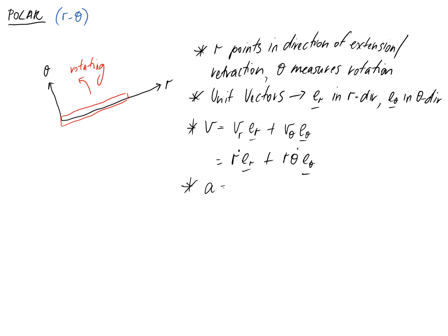Similarly for acceleration we have two components and these can be written as r double dot minus r theta dot squared er plus r theta double dot plus 2 r dot theta dot eθ.